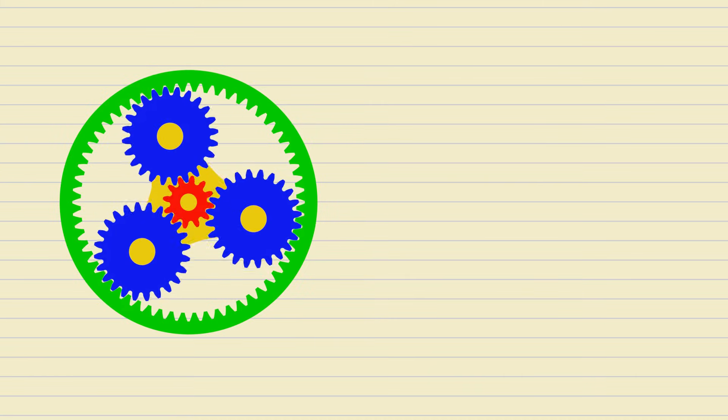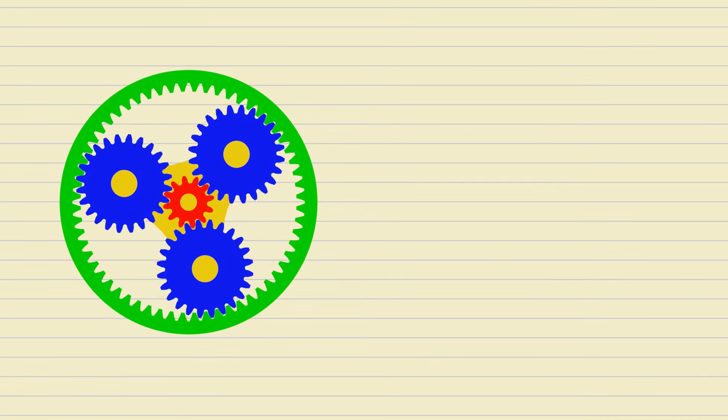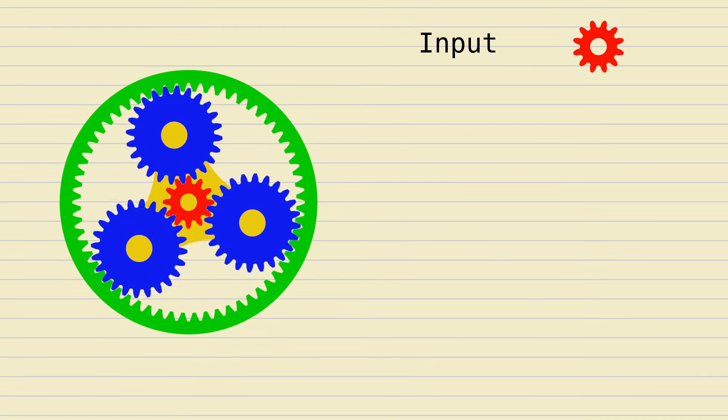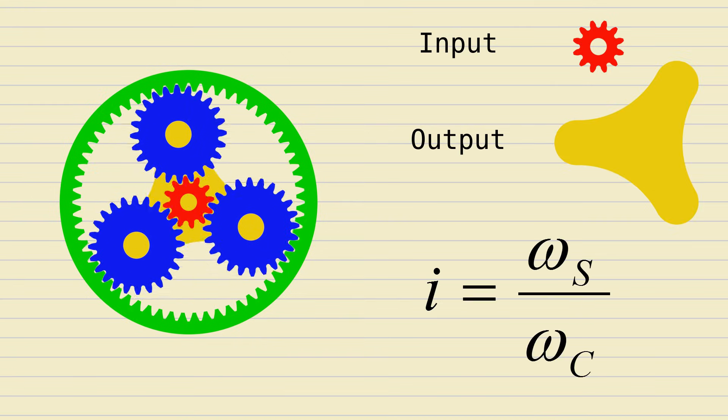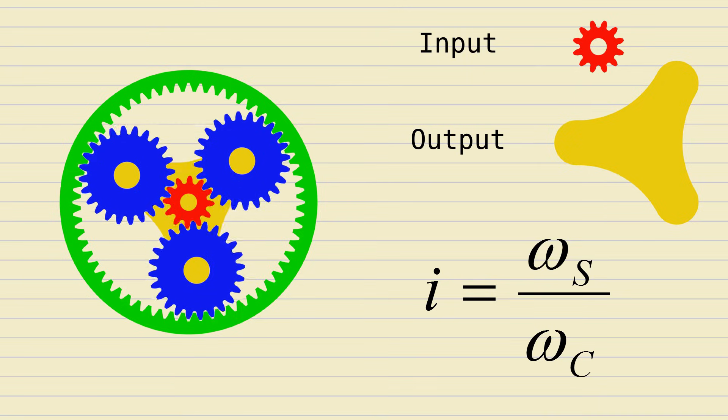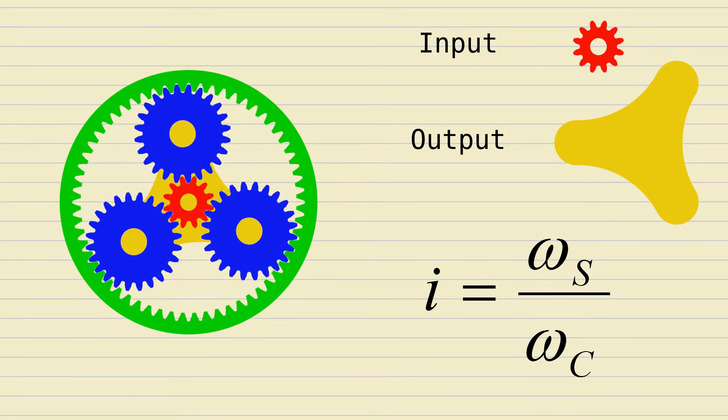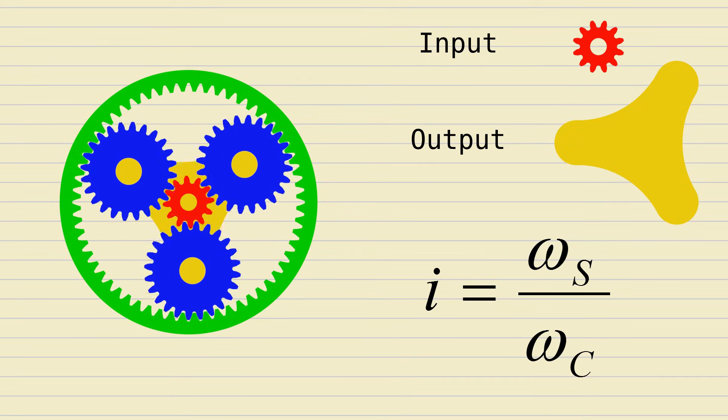What about the planetary mechanism? In the most common scenario, the input shaft is connected to the sun gear, and the output shaft to the carrier. The gear ratio for the planetary mechanism is, therefore, the angular velocity of the sun gear to that of the carrier.